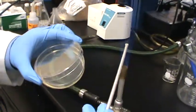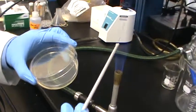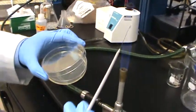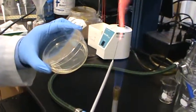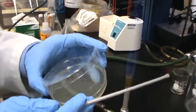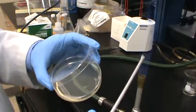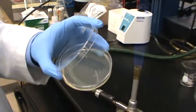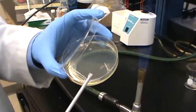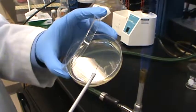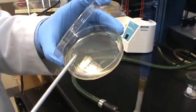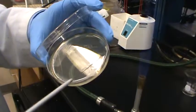Since this is going to be the last streak, I'm going to burn it and make sure it doesn't have any previous cells. This time I'm going to try to spread all over the plate. I'll cool the loop first to make sure it doesn't burn the cells.